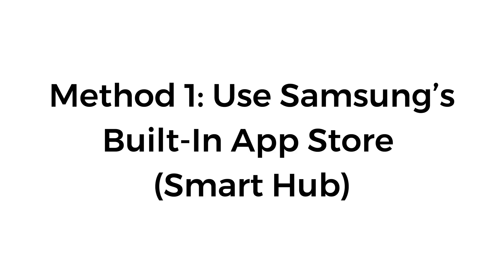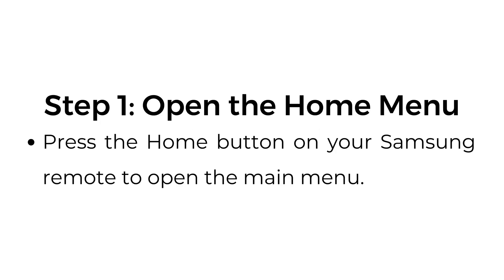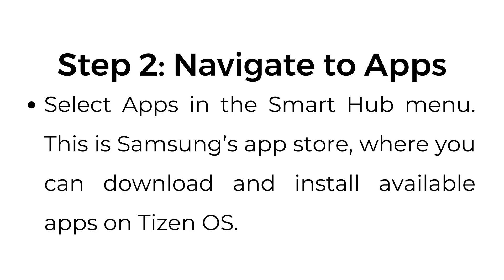Method number one: Use Samsung's built-in App Store, the Smart Hub. Open the Home Menu by pressing the Home button on your Samsung remote to open the main menu. Navigate to Apps and select Apps in the Smart Hub menu. This is Samsung's App Store, where you can download and install available apps on the Tizen OS.